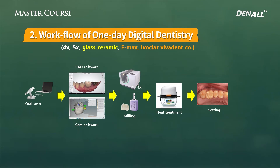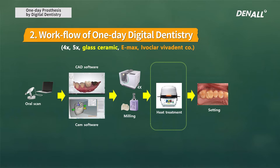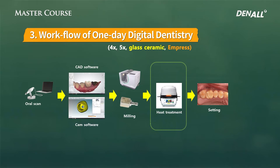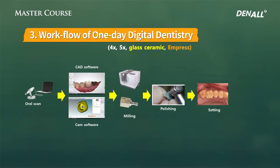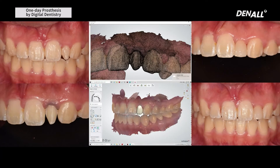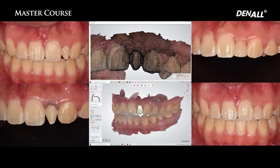The second route is the workflow of one-day digital dentistry using Emax. Heat treatment is necessary to transform the purple block into a tooth color. Heat treatment lasts about 45 minutes, so you can provide the prosthesis within about 2 hours. For Empress, another kind of glass ceramic, if coloring is necessary you can do heat treatment, but if unnecessary you can achieve an aesthetic crown just with polishing. In the case of a laminate, it is very difficult to provide a provisional; however, using digital dentistry, you can provide the prosthesis within 1 hour, maximizing patient satisfaction and reducing waiting time.